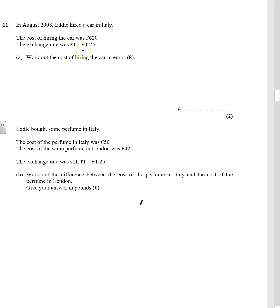Work out the cost of hiring the car in euros. Because every £1 is €1.25, we need to do £620 times 1.25, which gives us €775.